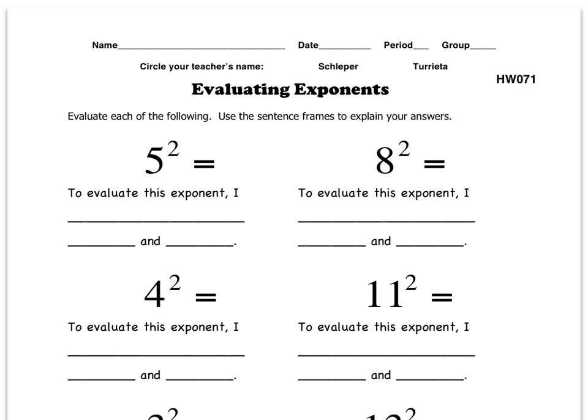On this first problem we have 5, base of 5, exponent of 2. So that's 5 raised to the power 2 equals. To evaluate this exponent, I multiplied 5 and 5. And I know 5 times 5 is 25, so there's my answer.